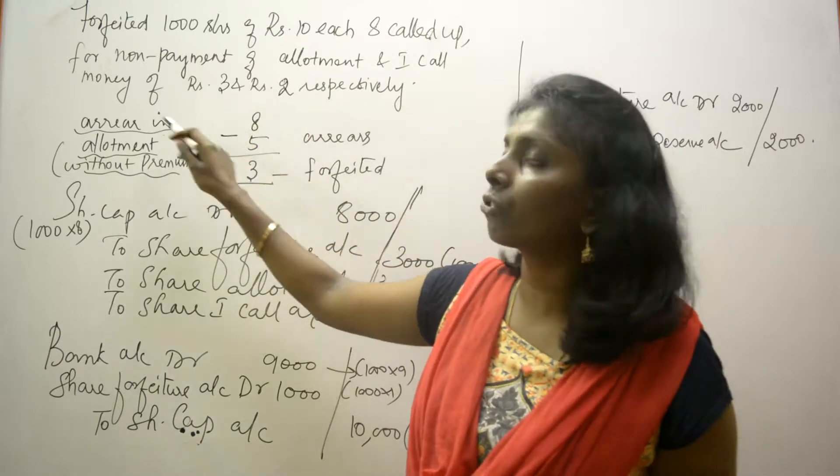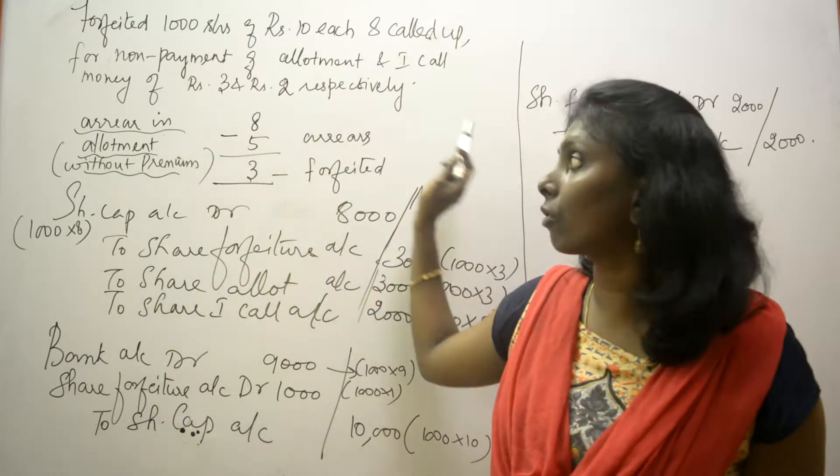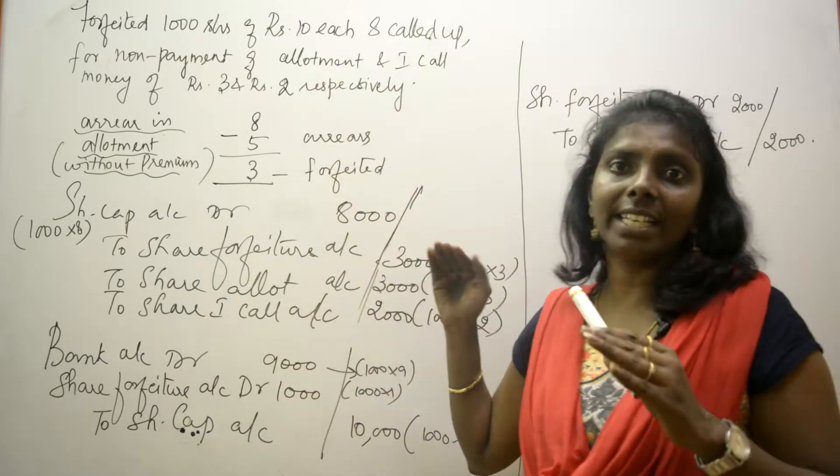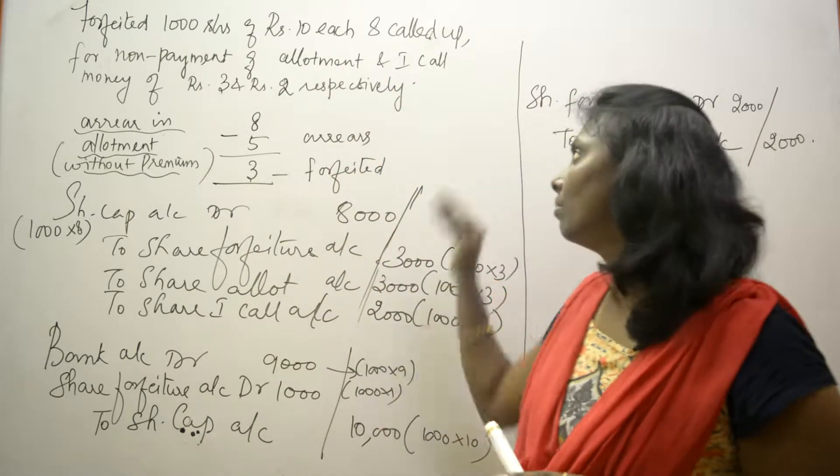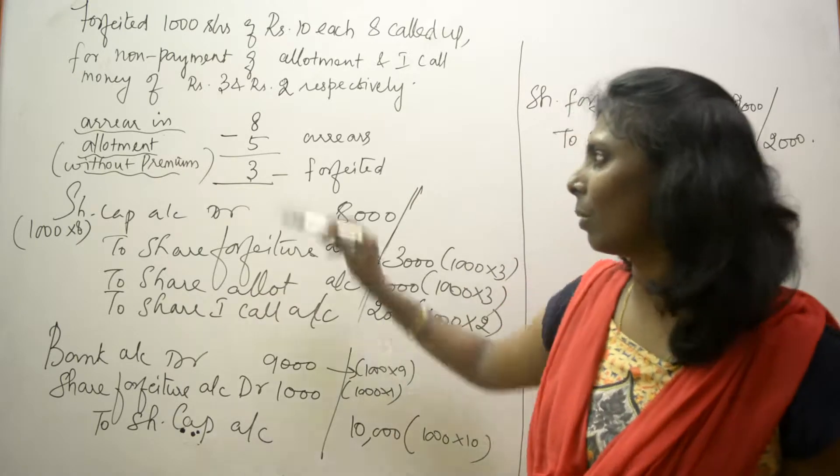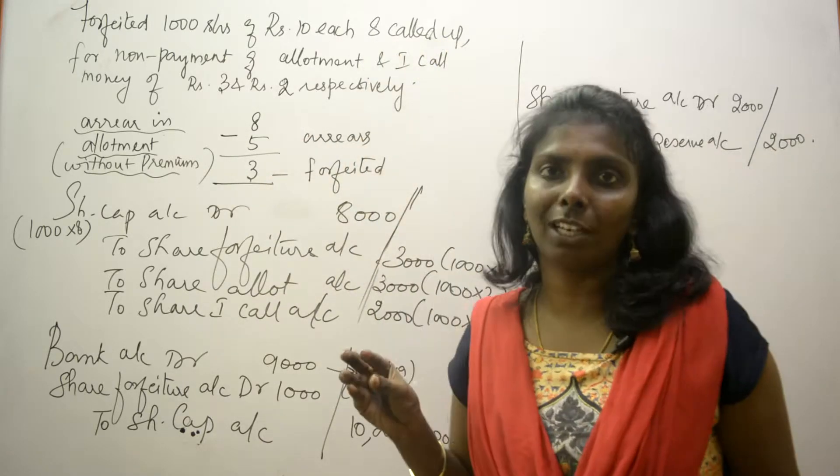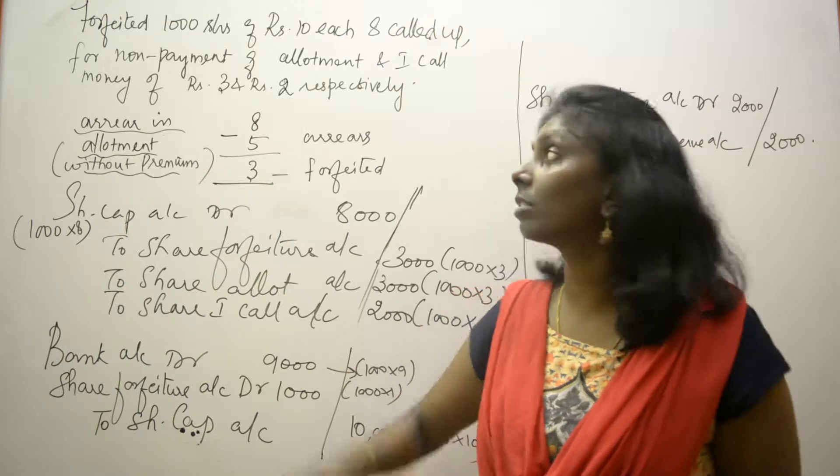In this case, when these kind of problems are given, the tree diagram does not help us. Look at the simple calculation I've made. When you have a called up value which is less than the total value, take the called up value. You guys know what is called up, right? The company did not call the remaining 2 rupees.